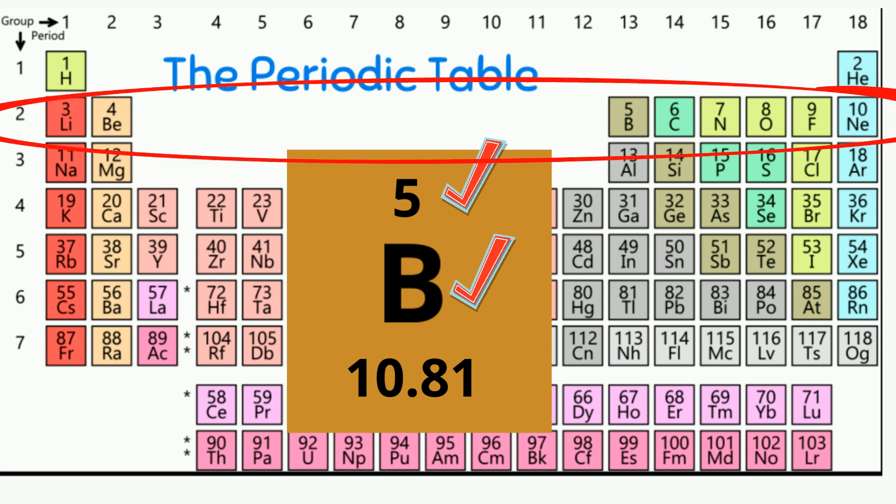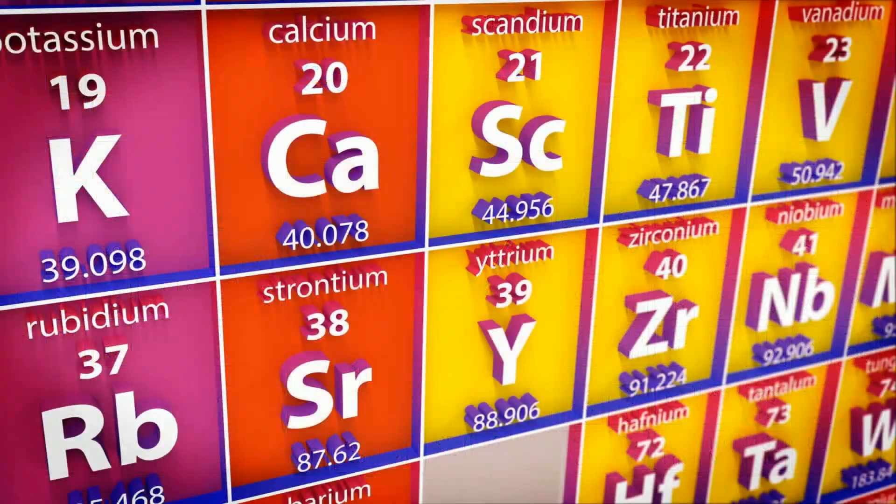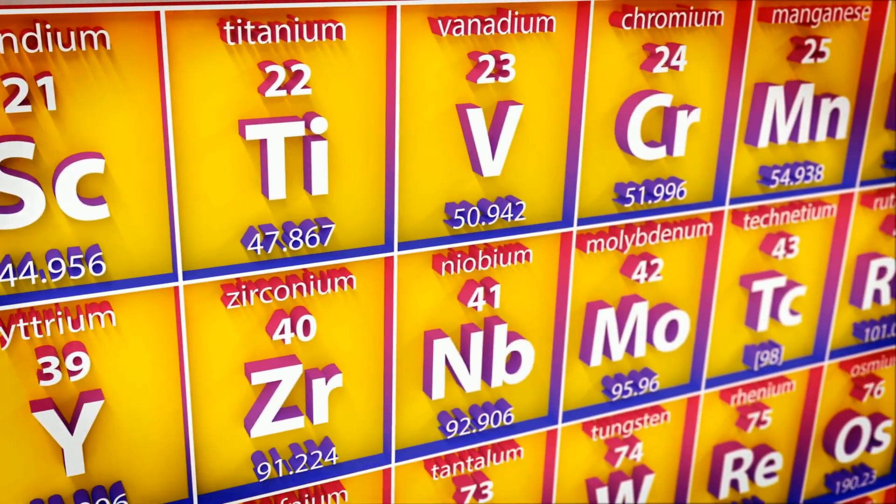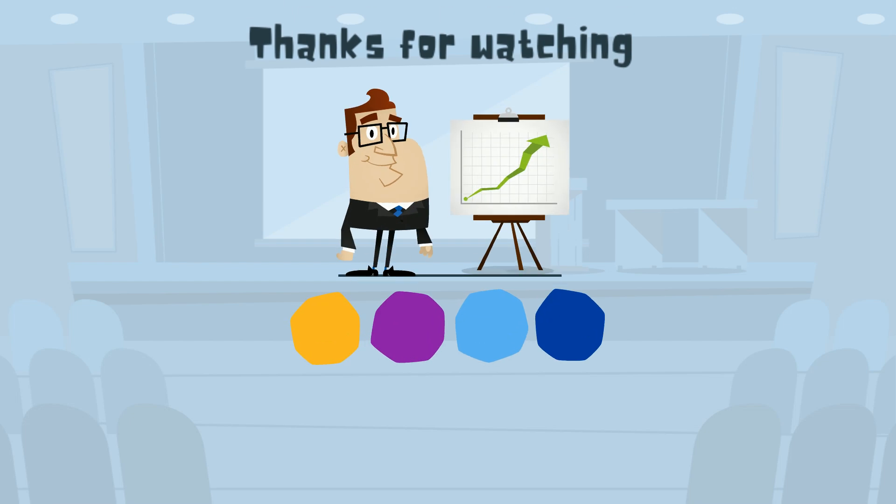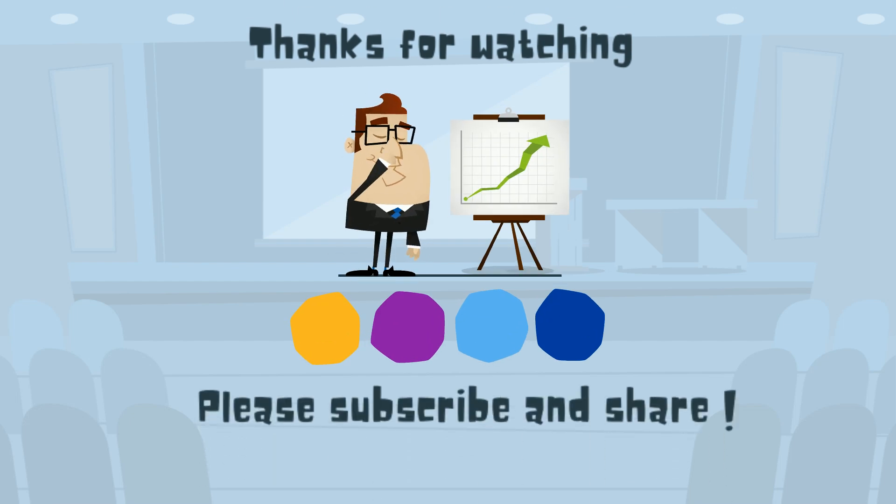And it is in period 2 which is the row number. So I hope that helps in reading the periodic table just a little bit. Thanks for watching and MooMoo Math uploads a new math and science video every day. Please subscribe and share.